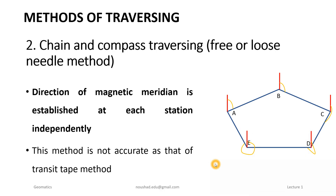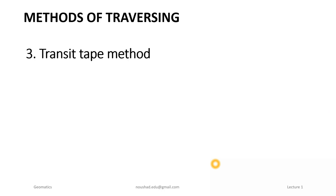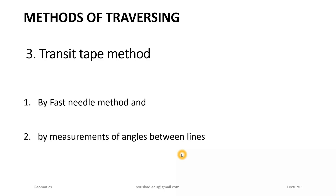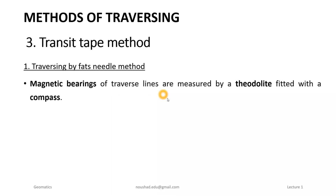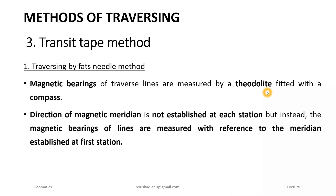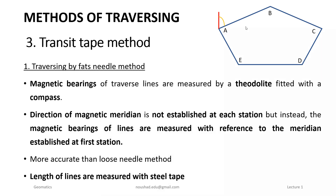This method is not as accurate as the Transit Tape Method. The next method is the Transit Tape Method, which uses a theodolite. Under this method we have two sub-methods: the first is the fast needle method, and the second is traversing by measurement of angles between the lines. In the fast needle method, the magnetic bearing of traverse lines are measured by a theodolite fitted with a compass.